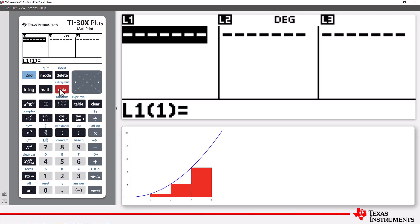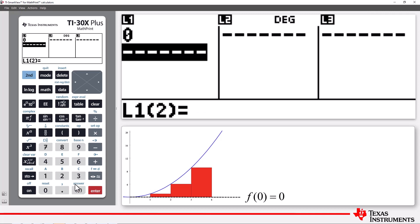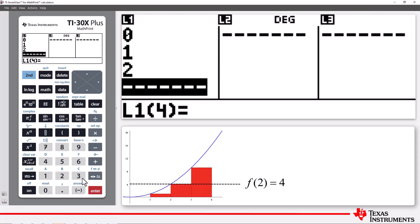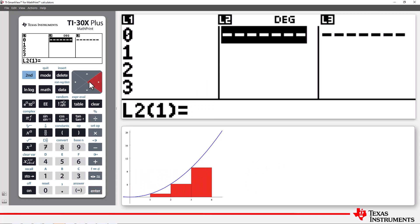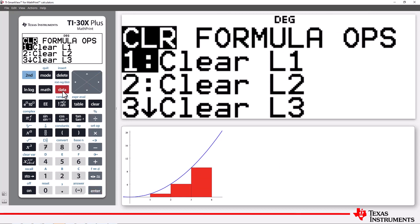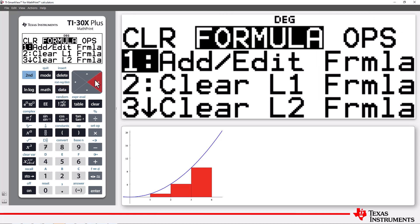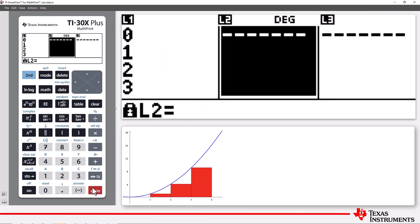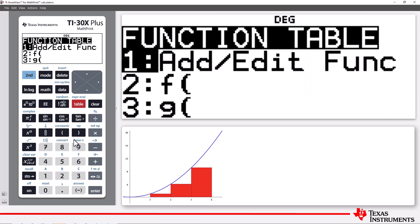The first rectangle is determined by x equals 0, the second x equals 1, then x equals 2, and finally x equals 3. The height of each rectangle can be stored in list 2, so I'll use a formula for list 2, f of list 1.